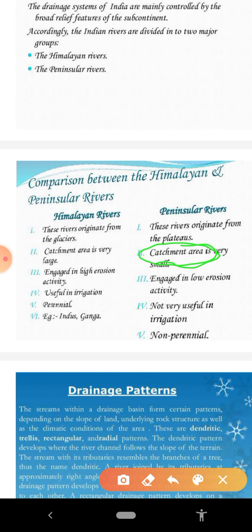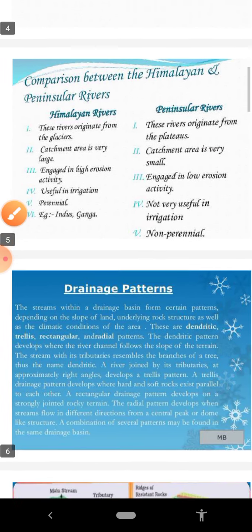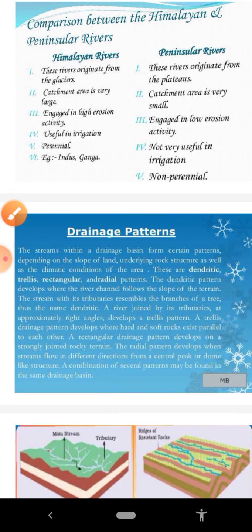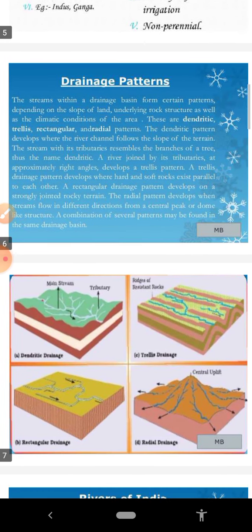After that, we will discuss drainage patterns. Different rivers form different types of designs or patterns. The designs formed by rivers depend on three important factors: the slope of the land, the underlying rock strata, and the climatic condition of the area. These three factors influence the drainage pattern.